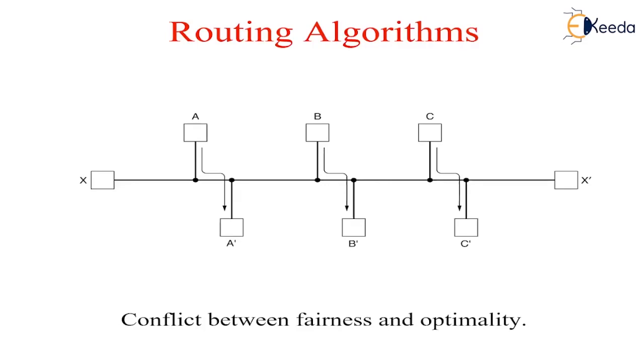Furthermore, these two goals are also in conflict. Since operating any queuing system near capacity implies a long queuing delay. As a compromise, many networks attempt to minimize the number of hops, because reducing the number of hops tends to improve the delay and also reduce the amount of bandwidth consumed, which tends to improve the throughput as well.